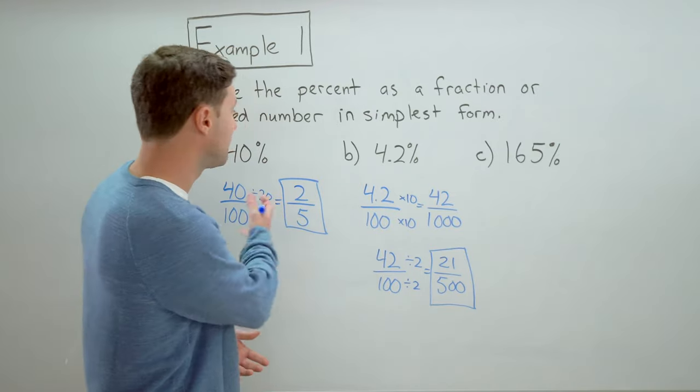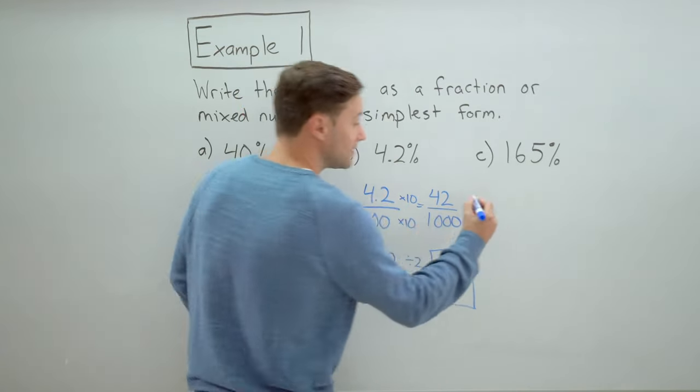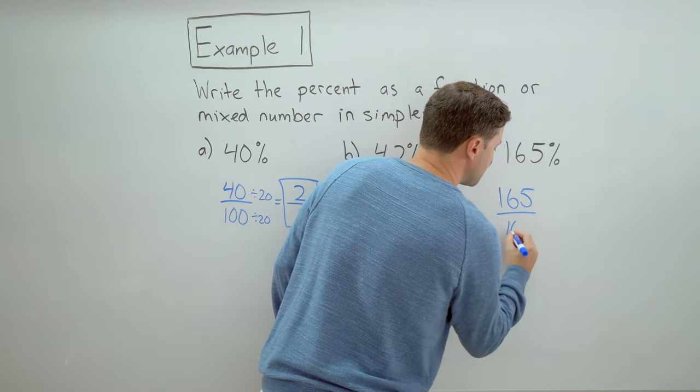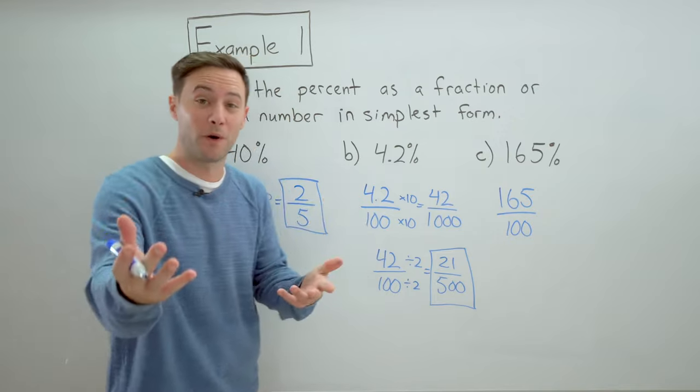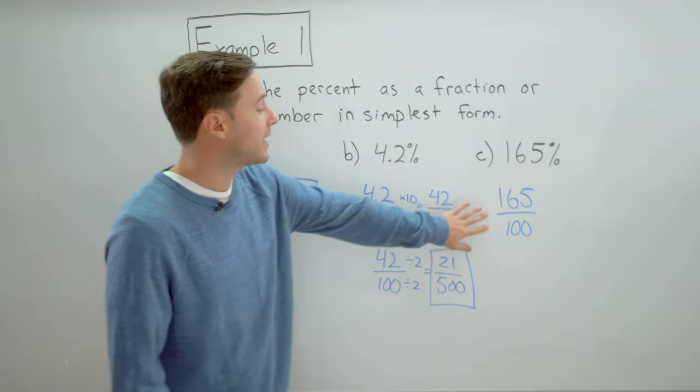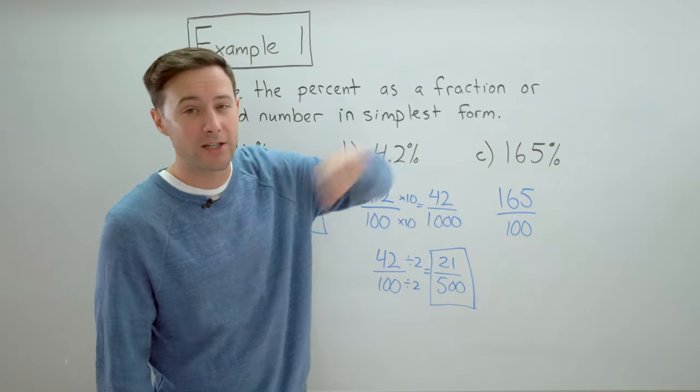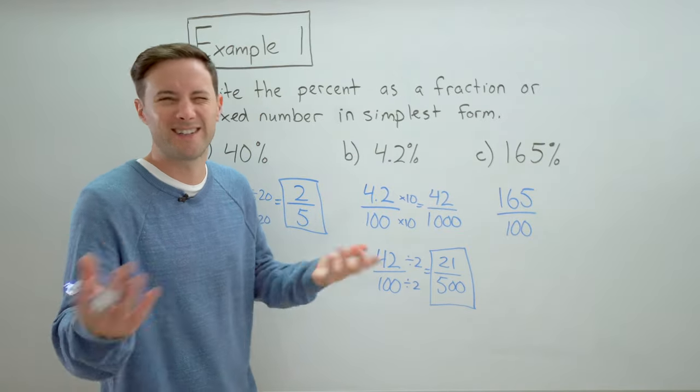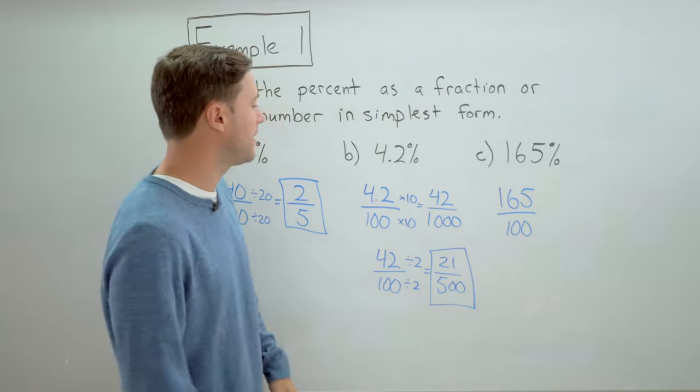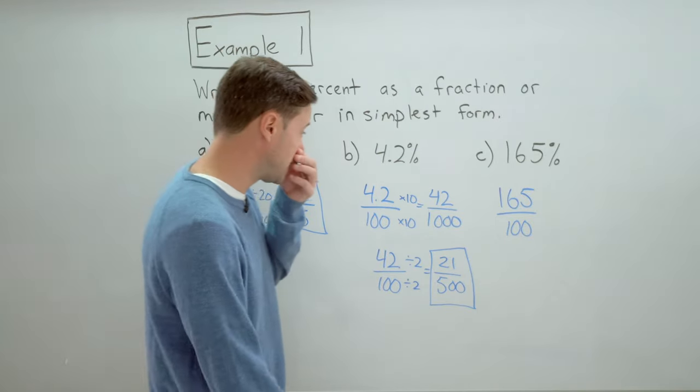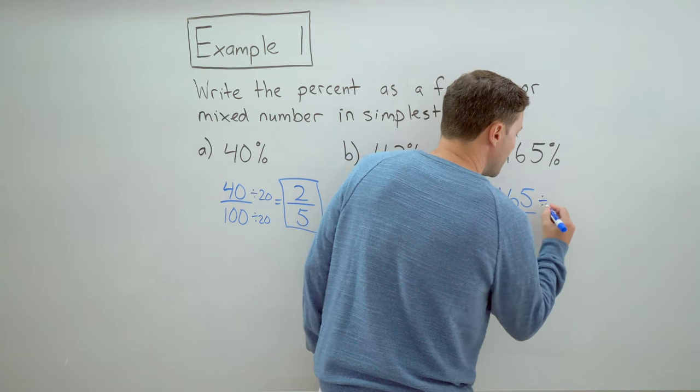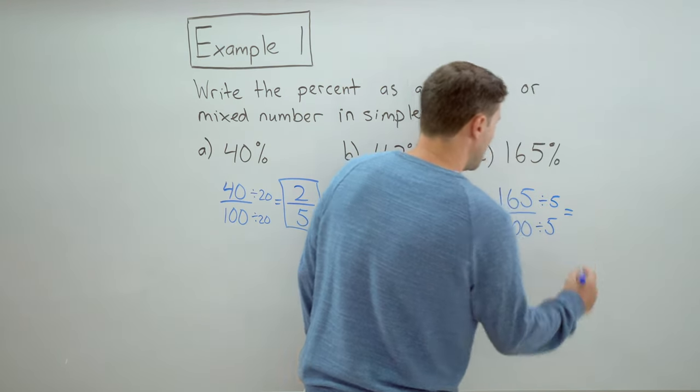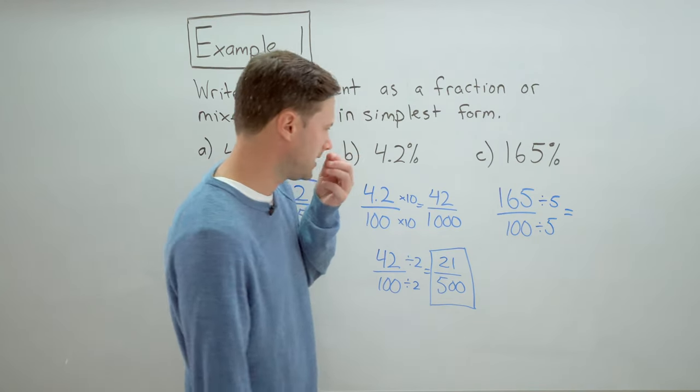Same thing as we've done the first two. One hundred sixty five percent. So one hundred sixty five over one hundred. We've got an improper fraction, which is what we expected. So now I can either simplify first and then change it to a mixed number or change it to a mixed number and then simplify. It doesn't really matter. I think I'm going to simplify first. So let's try to divide the numerator and denominator by five.